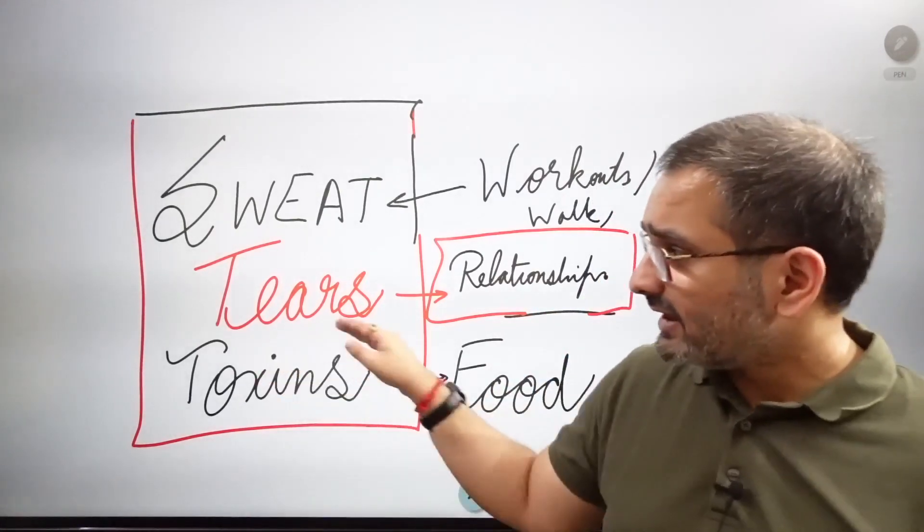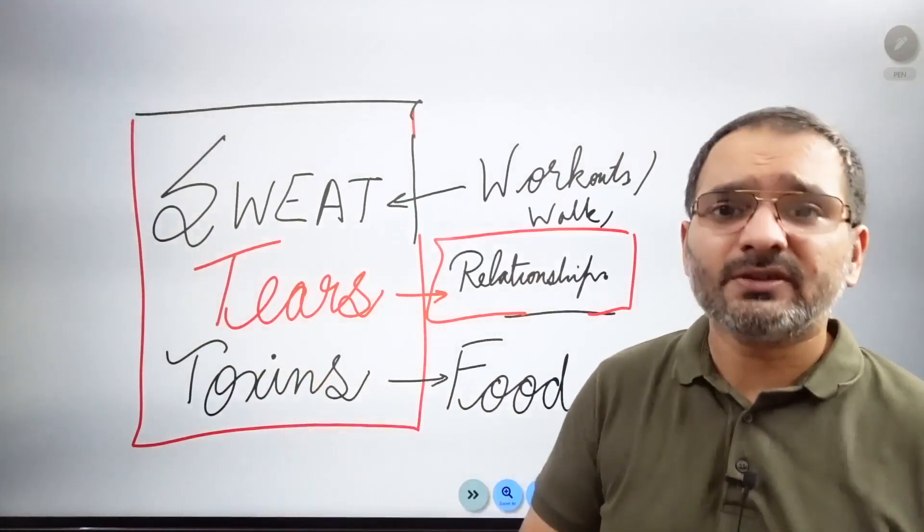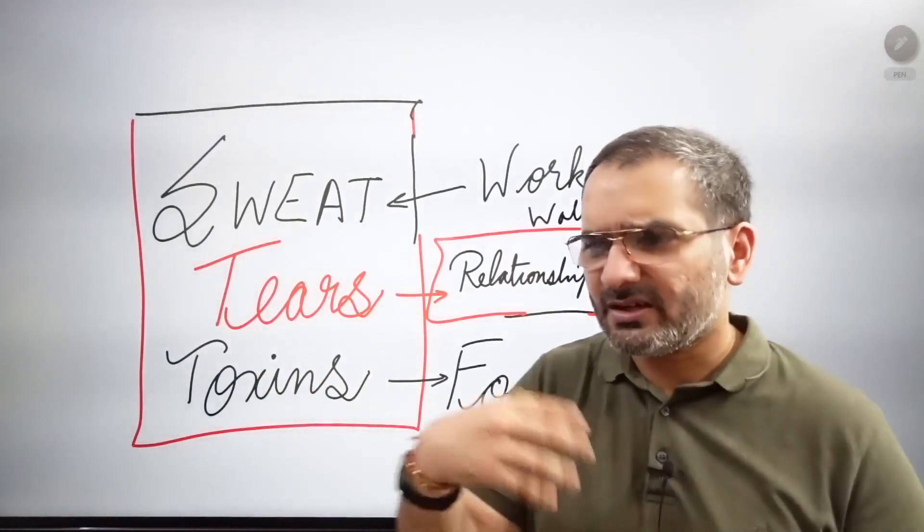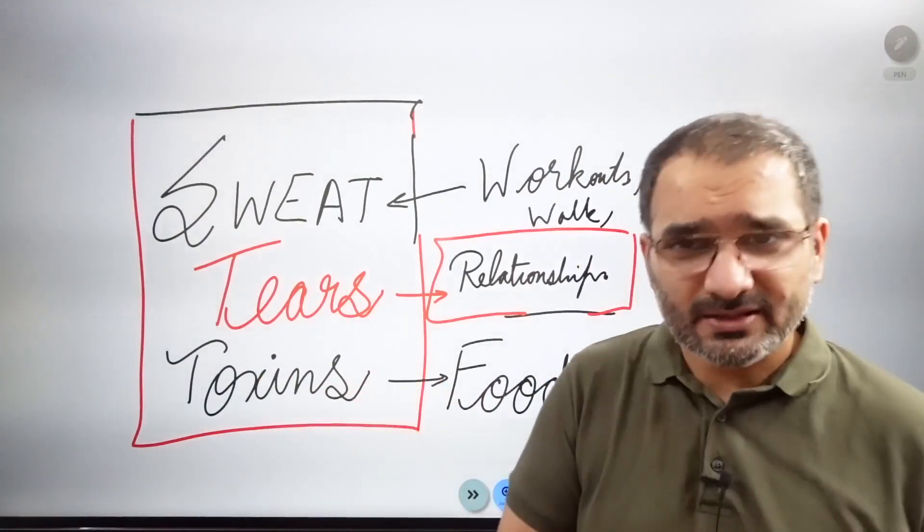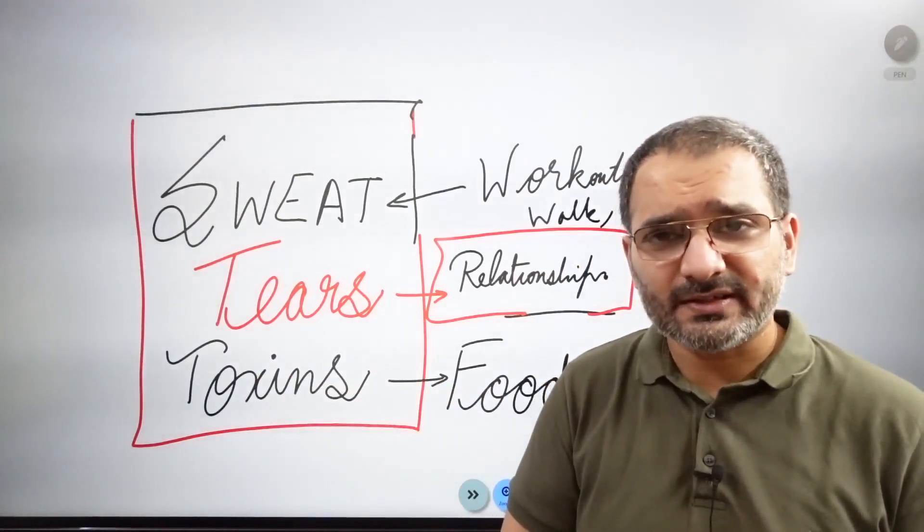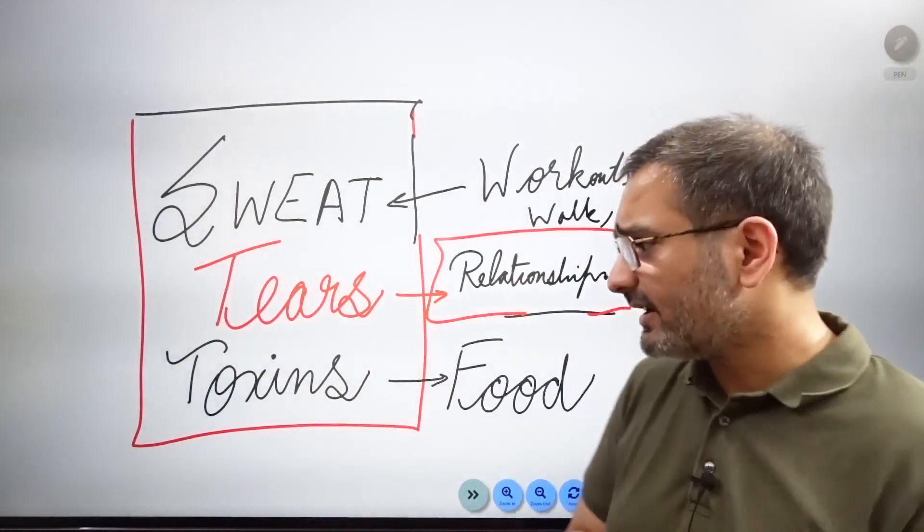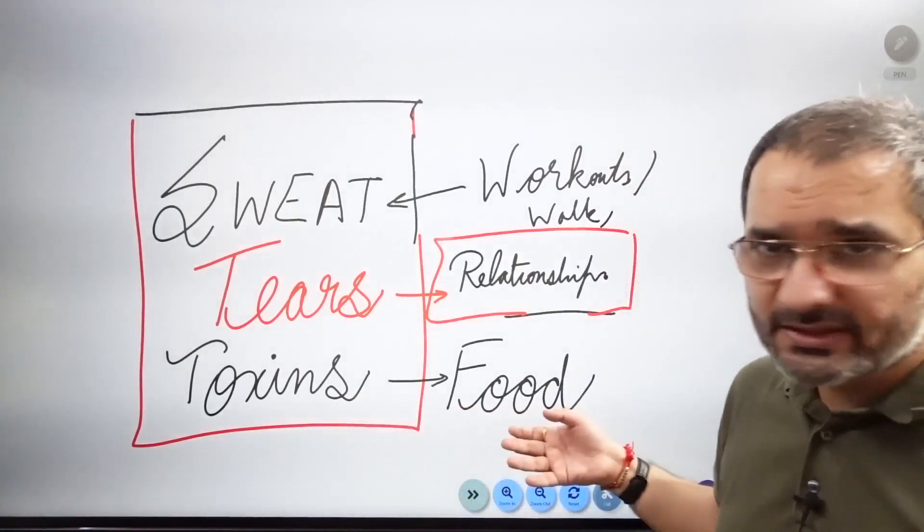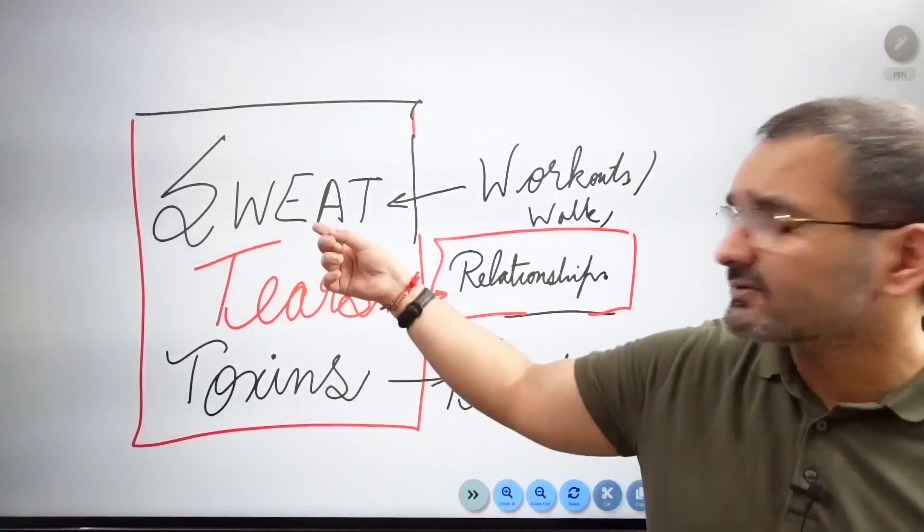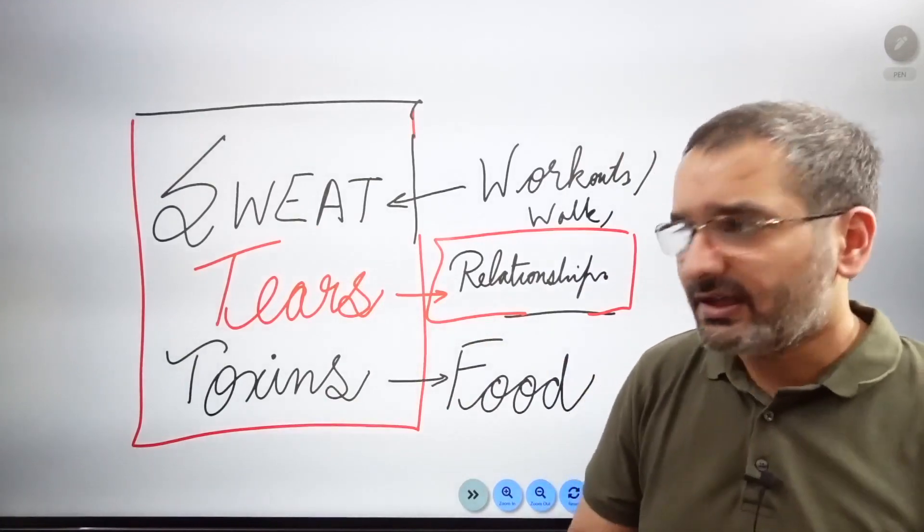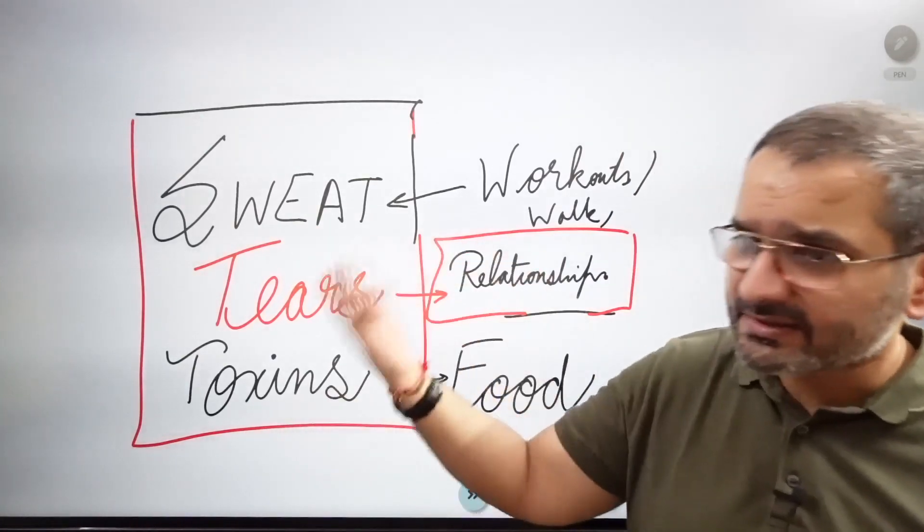Get the tears out, and then get the toxins out. We're eating McDonald's burgers, KFC, Domino's. Even home food nowadays has food pollution - so much fertilizer, so many chemicals. Toxins are basically coming from food. How do you remove toxins? Via sweat - toxins come out through sweat.